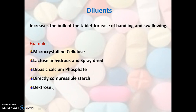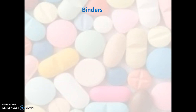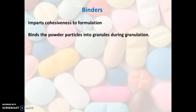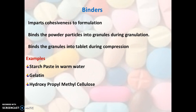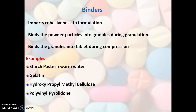The next category is binders. Binders are those agents which impart cohesiveness to the formulation. They bind the powder particles into granules during granulation and bind the granules into the tablet during compression. Examples of binders are starch paste in warm water, gelatin, hydroxypropyl methylcellulose, and polyvinylpyrrolidone.